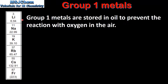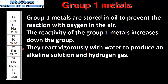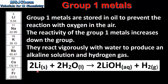Next we look at the chemical reactivity. Group 1 metals are stored in oil to prevent reaction with oxygen in the air. The reactivity of the group 1 metals increases down the group, so lithium is the least reactive and cesium is the most reactive. They react vigorously with water to produce an alkaline solution and hydrogen gas. Here we have the reaction of lithium and water to produce lithium hydroxide and hydrogen. All group 1 metals react in the same way, and the resulting solution has a pH of between 12 and 14.